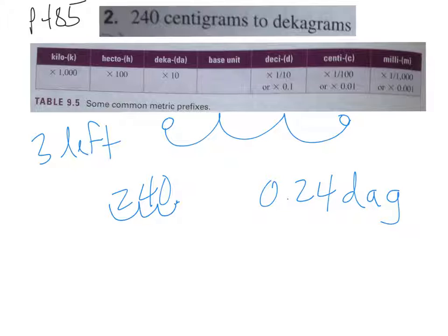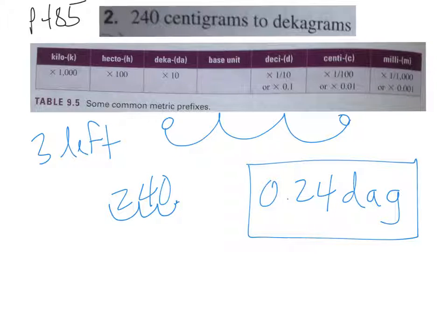Subtle point there: when you abbreviate decagrams, all of them are pretty straightforward. Kilograms is kg, hectograms is hg. But because deci and deca both start with d, if you see dg it means decigram, and if you see dag that means decagram. So keep in mind the difference: deca is d-a, deci is just d.